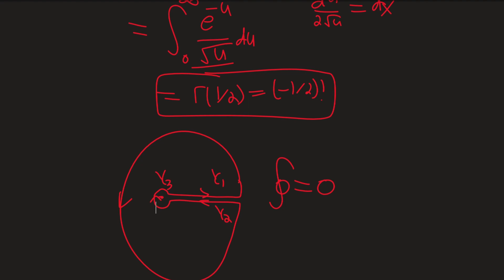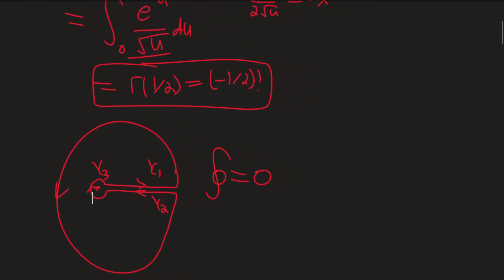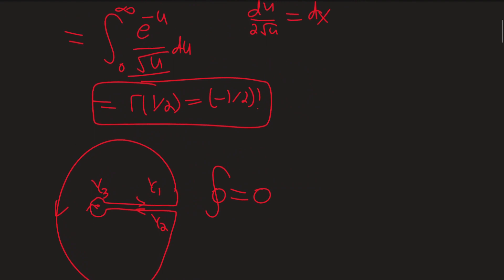Almost essentially by definition, the integral over gamma one is just I — I mean, just kind of by definition. But now let's take a look at the integral over gamma two.